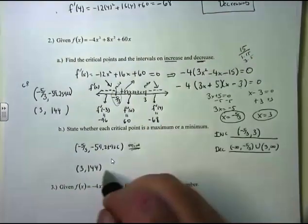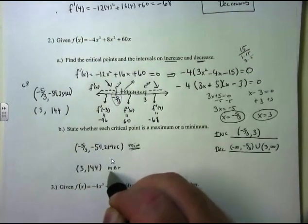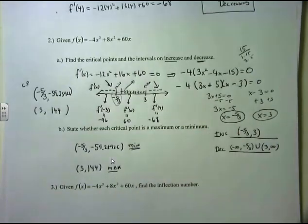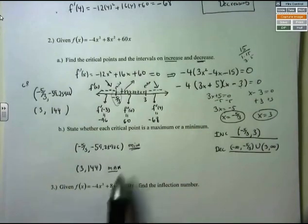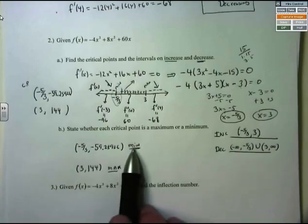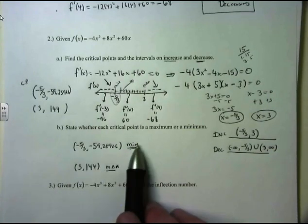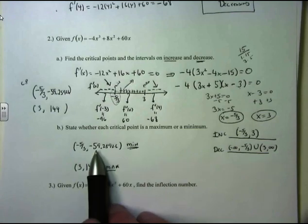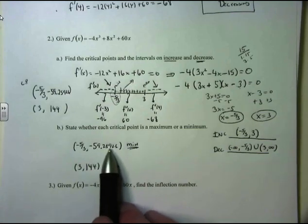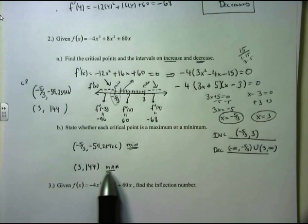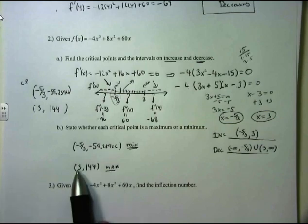So the minimum occurs at x = -5/3, and the minimum value is approximately -59.25926. The maximum point occurs at x = 3, and the maximum value is 144.